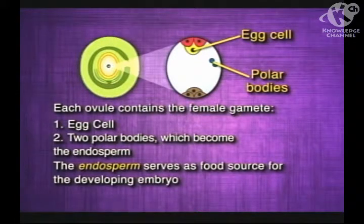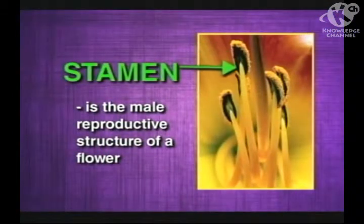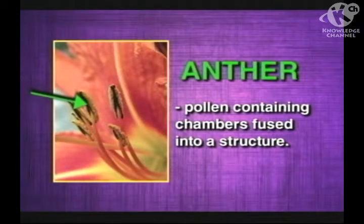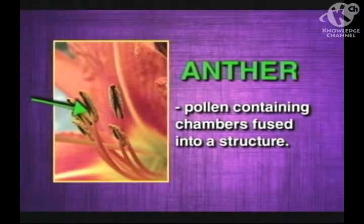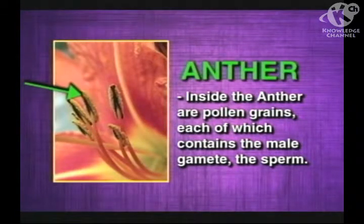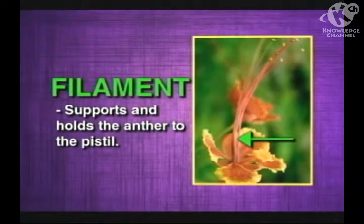The endosperm serves as a food source for the developing embryo. The stamen is the male reproductive structure of a flower. It consists of pollen-containing chambers fused into a structure called the anther. Inside the anther are pollen grains, each of which contains the male gamete, the sperm. The filament supports and holds the anther to the pistil.